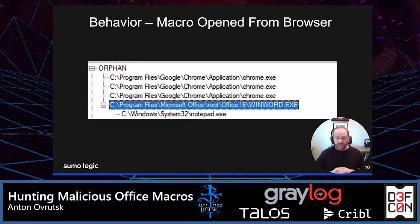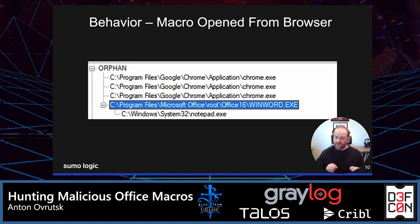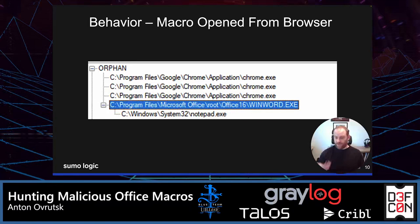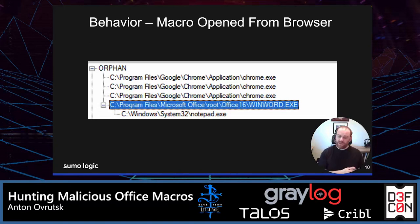This process tree on this slide is the exact same macro, however this one is opened directly from a browser instead of a trusted file share. Just by using process creation events, we can already start to discern macro behavior — something that is probably benign, like opening a macro from an internal file share, versus opening a macro from a website of some kind. You can also use this process information, knowing the macro was opened from a website, to do some pivoting to figure out exactly where a particular macro was downloaded from.